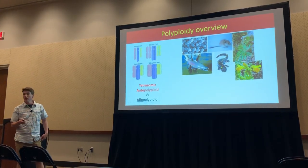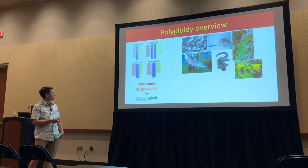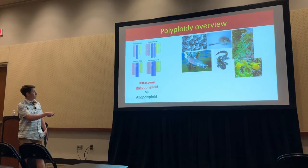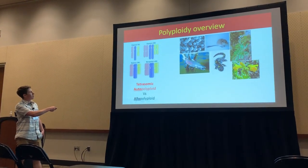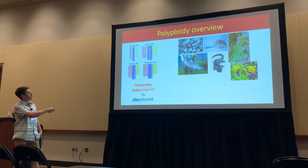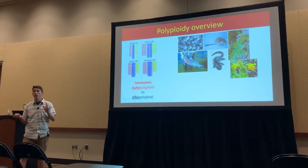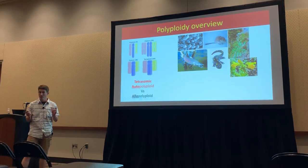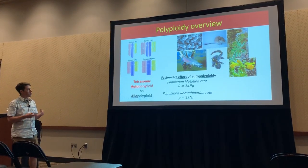We're going to focus specifically on tetrasomic auto-polyploids, which means that if we look at our tetraploid, these purple chromosomes — that chromosome is equally likely to pair with any of the other remaining three chromosomes. That's tetrasomic.